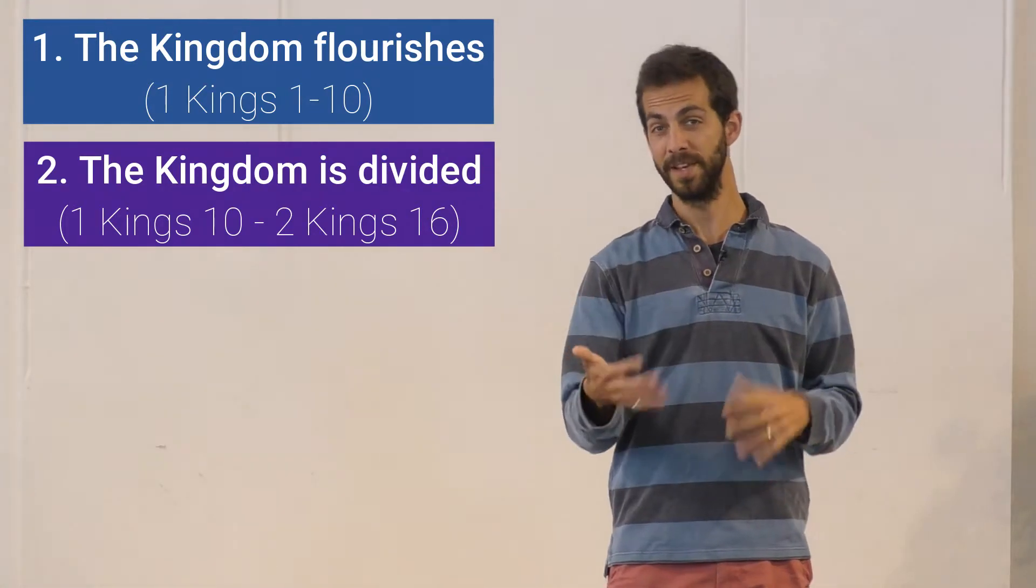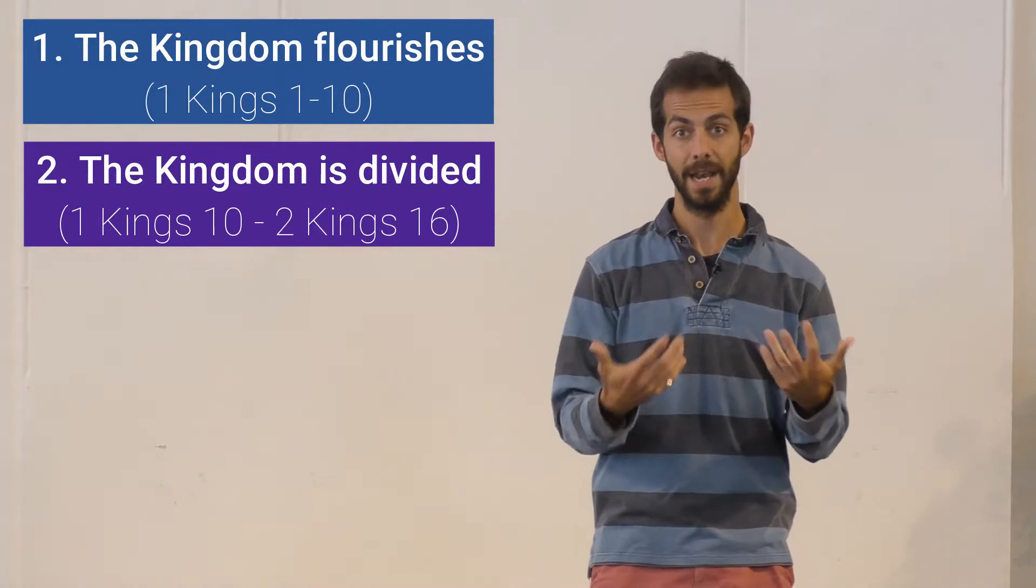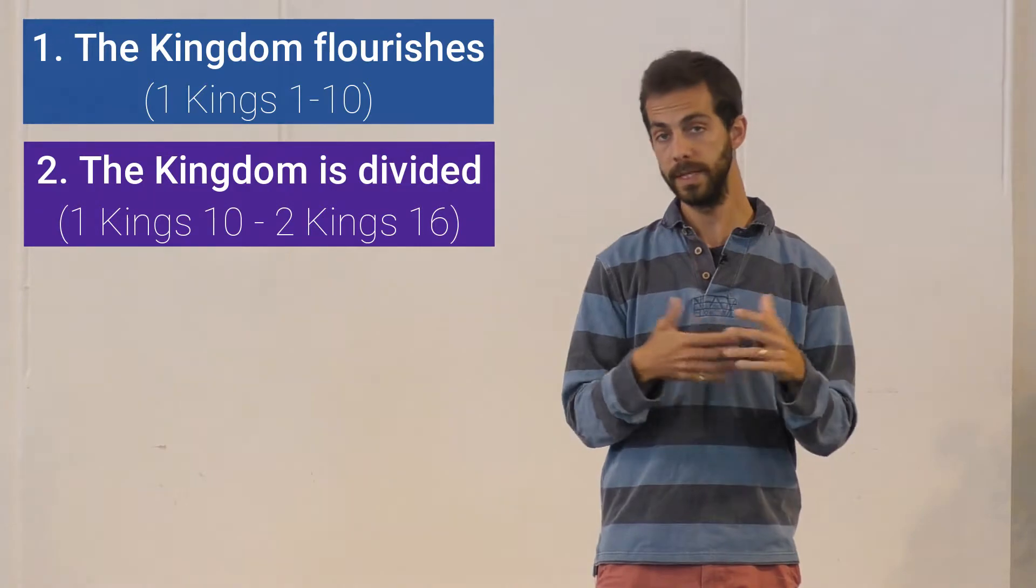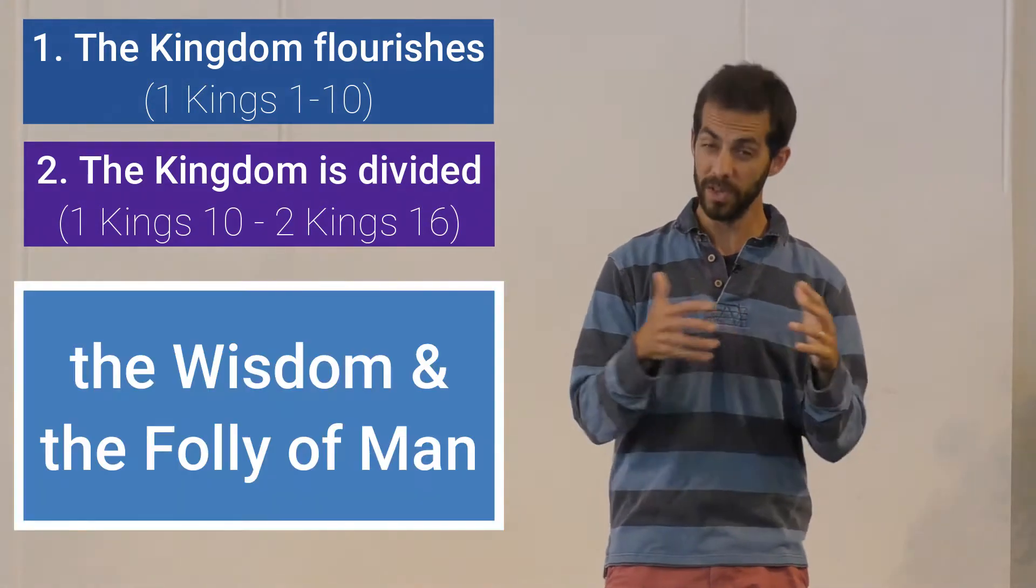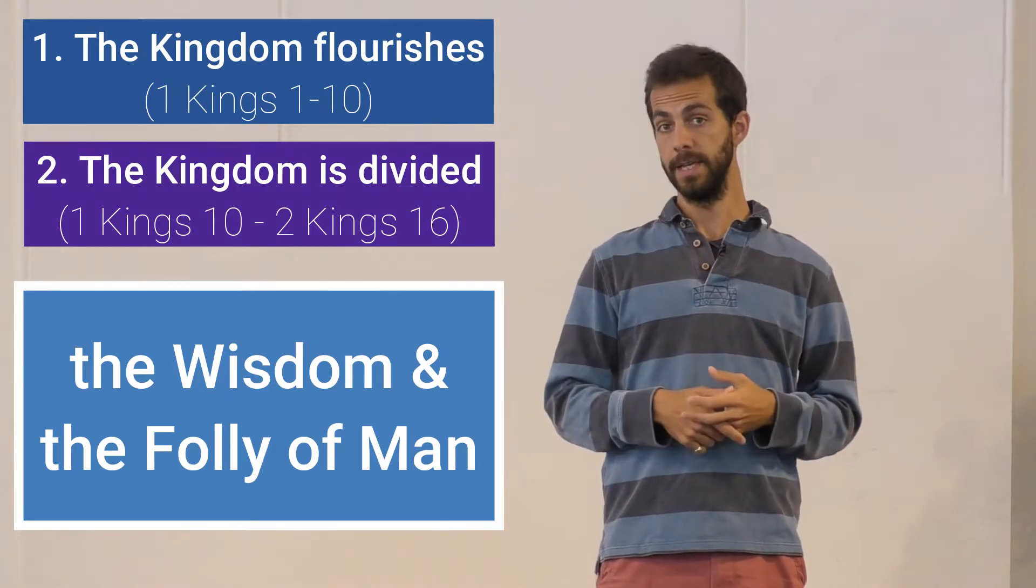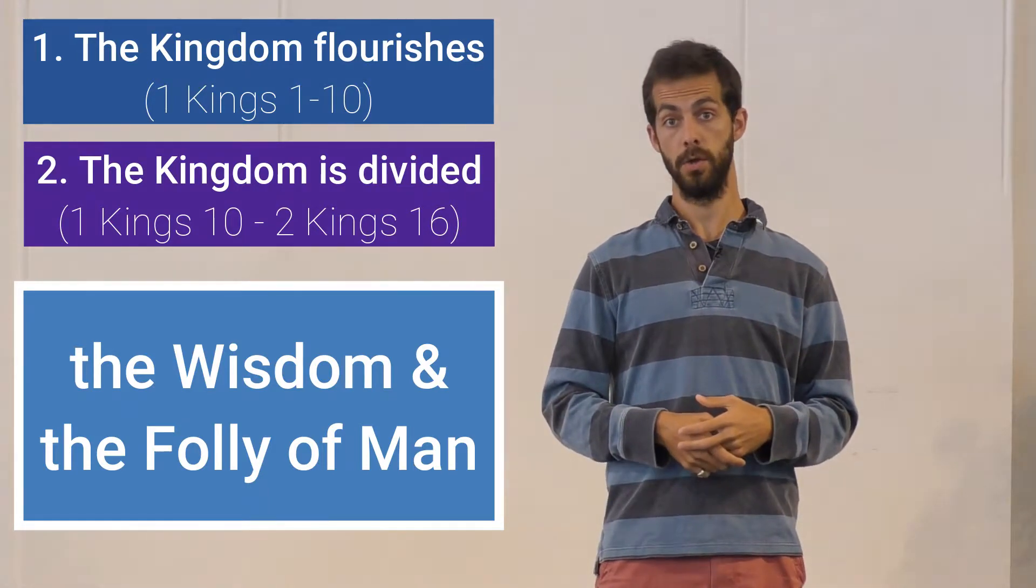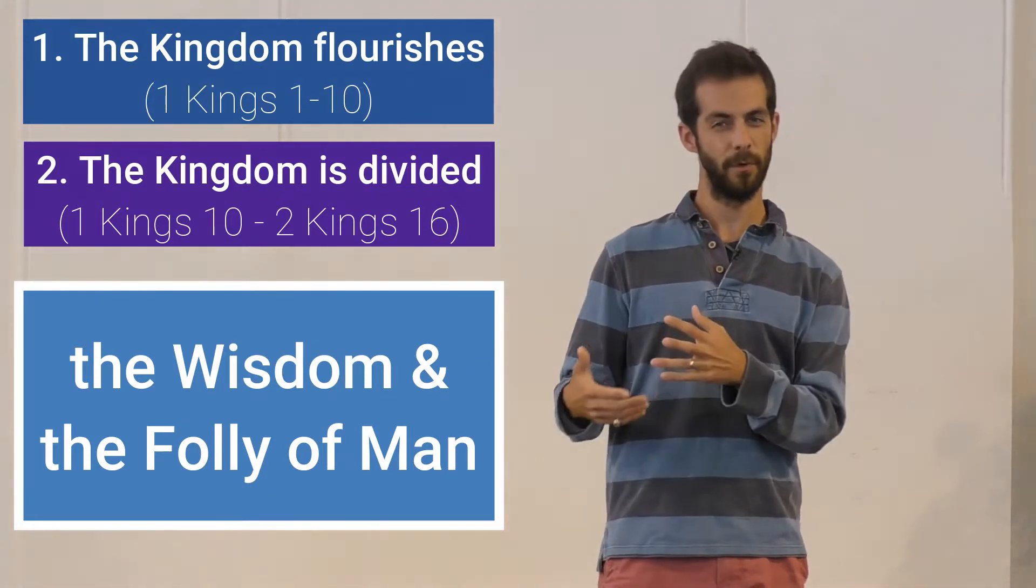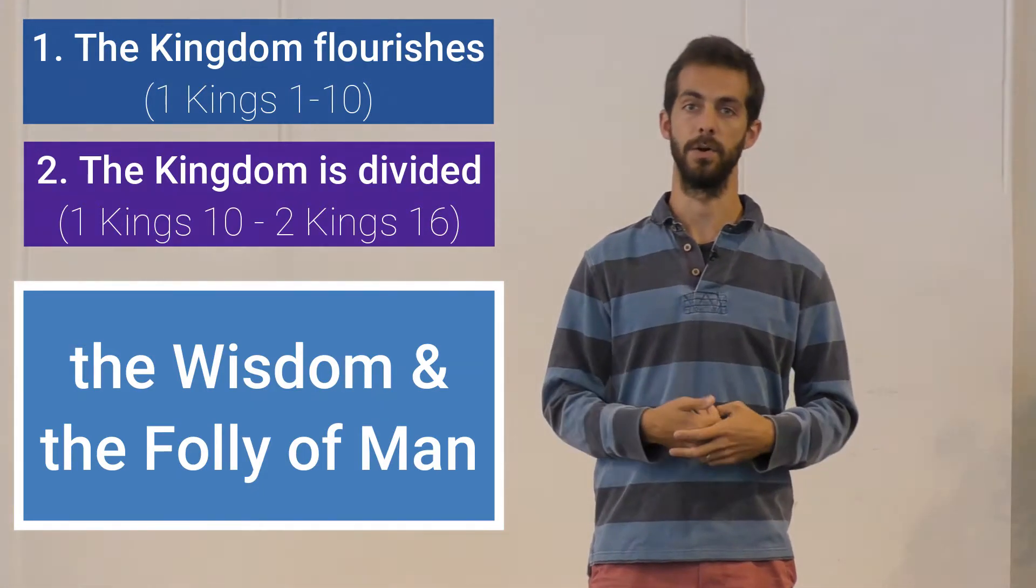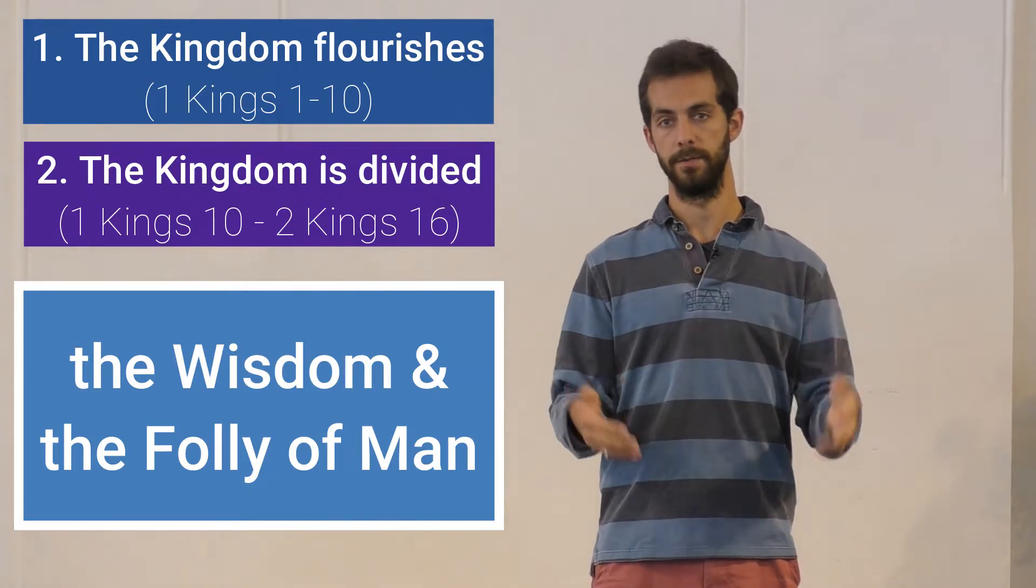Not even prophets, great prophets like Elijah and Elisha can turn the tide. And that's the first theme to look out for as you read the book of 1 and 2 Kings. The wisdom and the folly of man. Both are clear to see and you don't have to be a king to learn from the kings. Their lives inform us and warn us of loyalty and disloyalty to God. Of wisdom and folly.